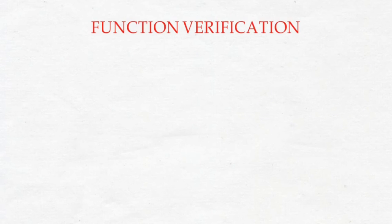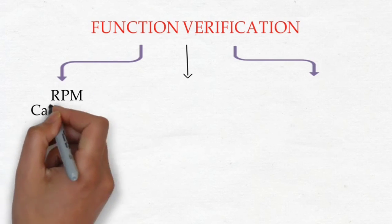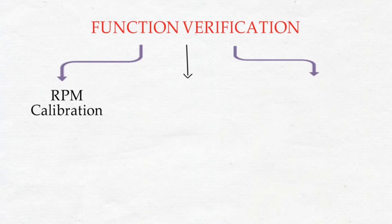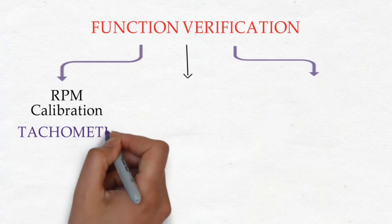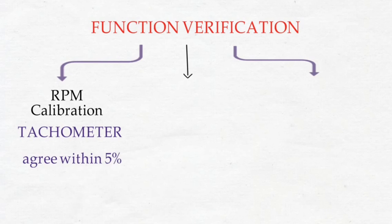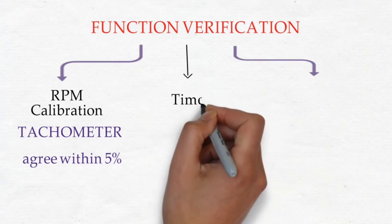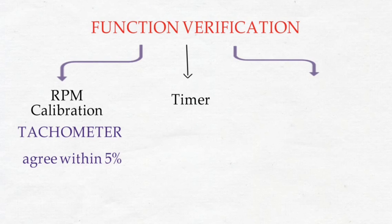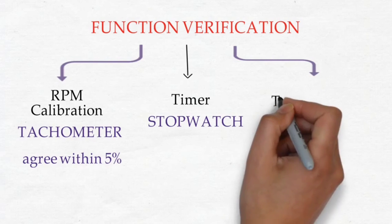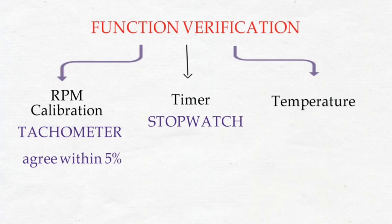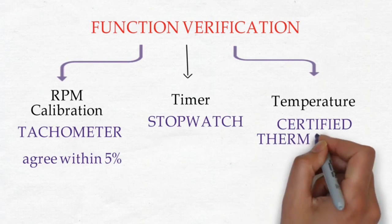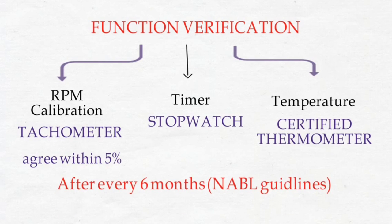For function verification: first, RPM calibration — the speed should be checked using an external tachometer, and values should agree within 5% of the built-in tachometer. Second, timer — timing intervals should be checked using a stopwatch. Third, temperature — for refrigerated centrifuges, the chamber temperature should be verified against a certified thermometer. All these functions should be verified every 6 months according to NABL guidelines.